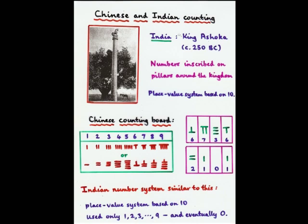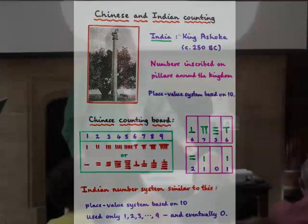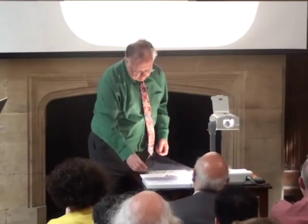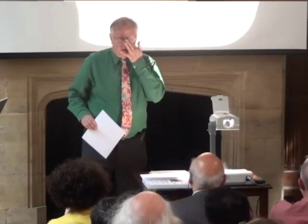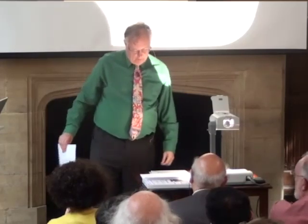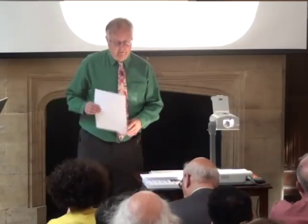But the Indians did however whether they were familiar with Chinese counting boards is unknown although the Chinese certainly visited India and the boards were transportable a bit like laptops well not quite like laptops so it's quite possible but in any case the Indian number system did develop as a place value system based on 10 using only the numbers 1 to 9 unlike the Egyptian Greek symbols but eventually and possibly around 400 AD bringing in the number 0.